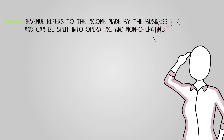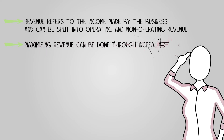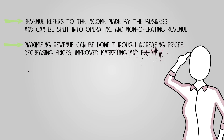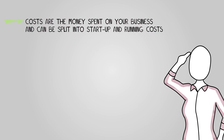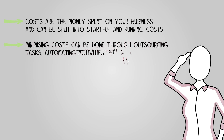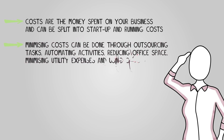In conclusion, revenue refers to the income made by the business and can be split into operating and non-operating revenue. Maximizing revenue can be done through increasing prices, decreasing prices, improved marketing, and expanding the product portfolio. Costs are the money spent on your business and can be split into startup and running costs. Minimizing costs can be done through outsourcing tasks, automating activities, reducing office space, minimizing utility expenses, and using cheaper suppliers.